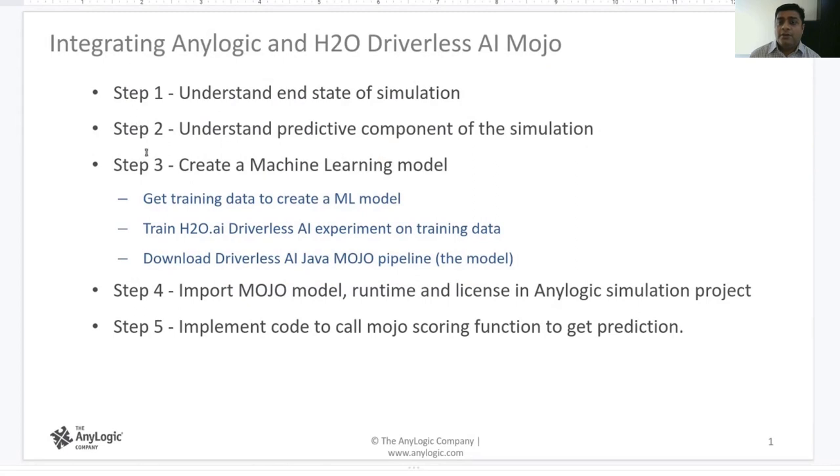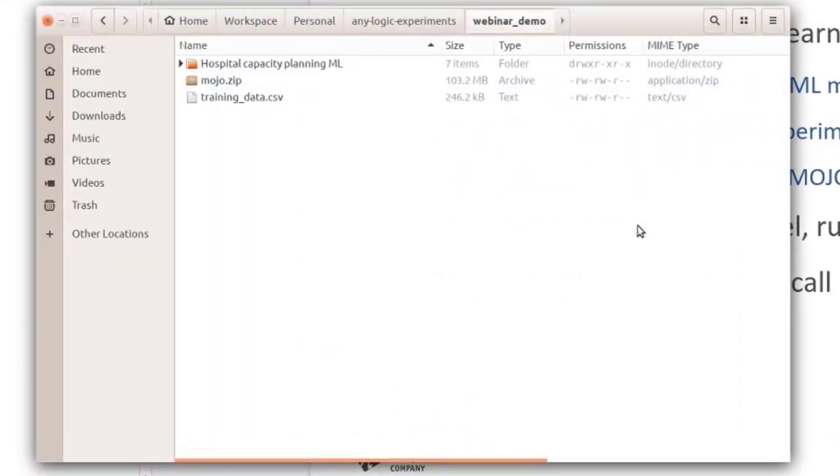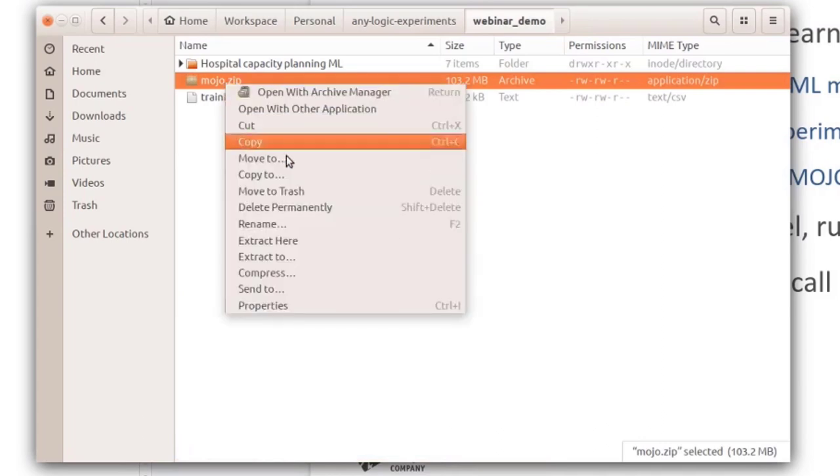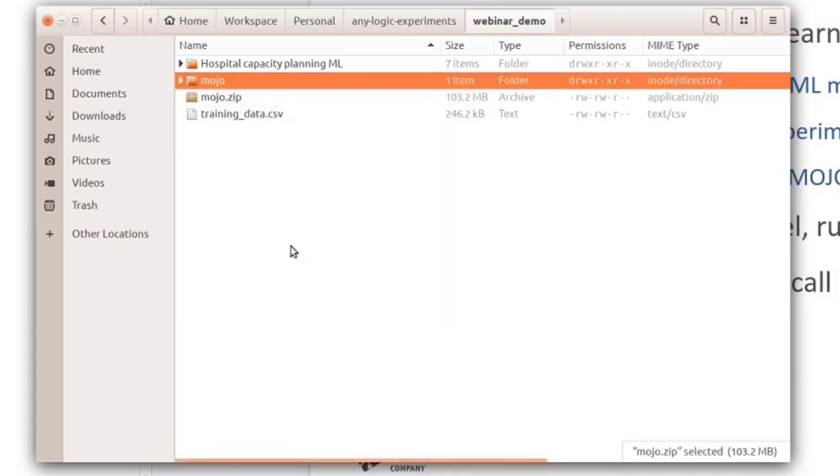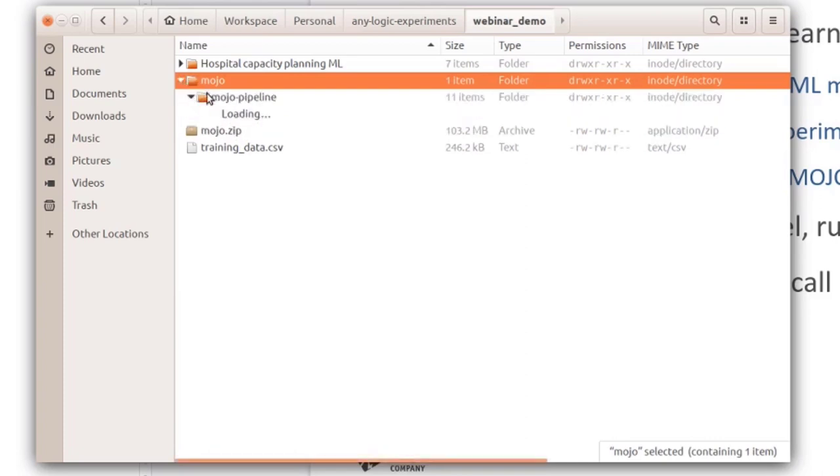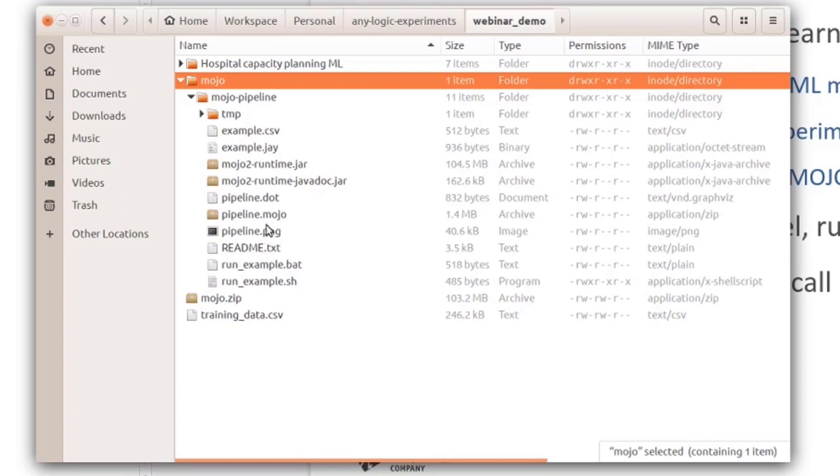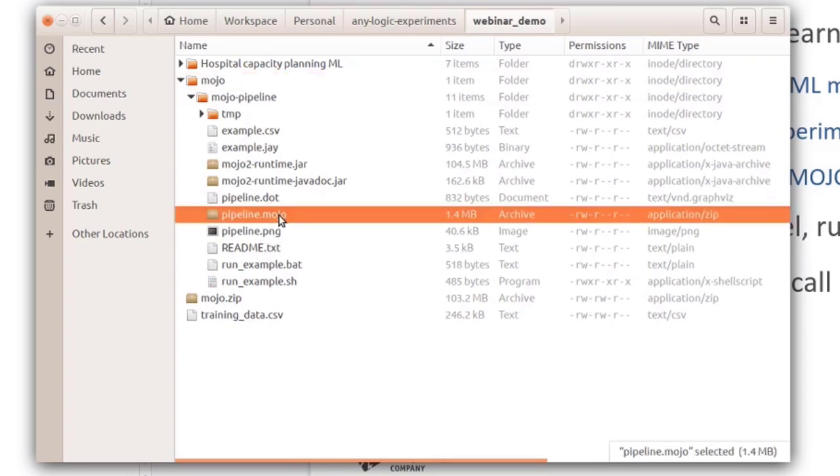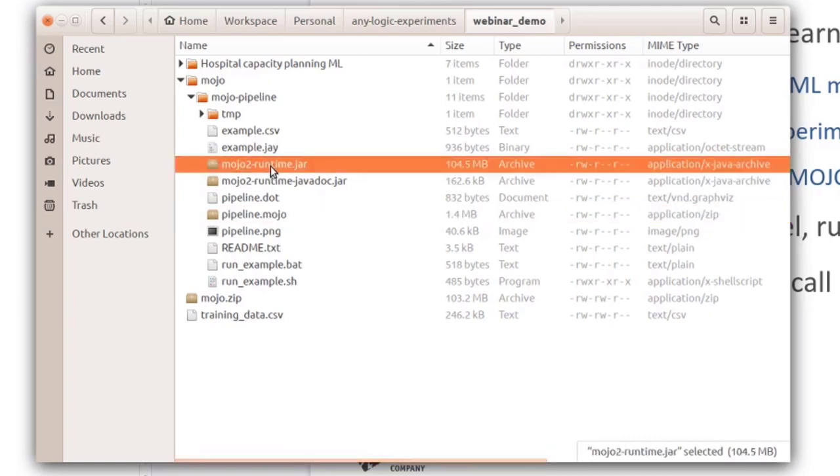Okay so far we have completed steps one two and three. Now we do have the Java Mojo Scoring Pipeline and now we are going to see how to integrate it with AnyLogic. With the Mojo.zip downloaded, let's go ahead and extract it here. Once you extract the Mojo.zip file, you will get this directory. Within the Mojo directory, there are two main important files that we need. The pipeline.mojo which is the machine learning model and the Mojo runtime which understands how to execute this model.